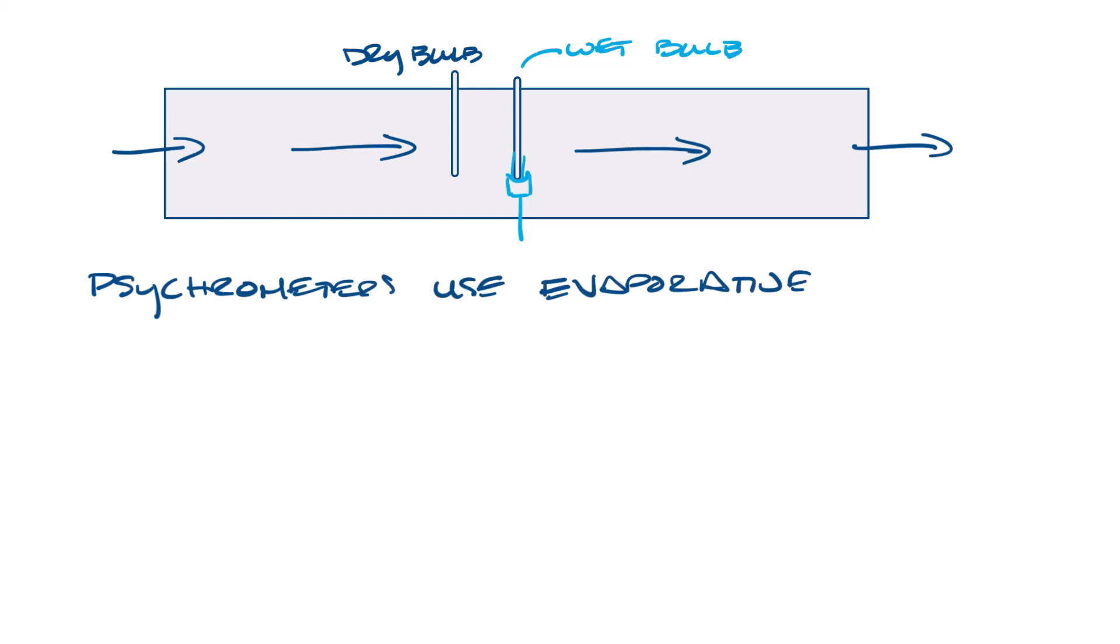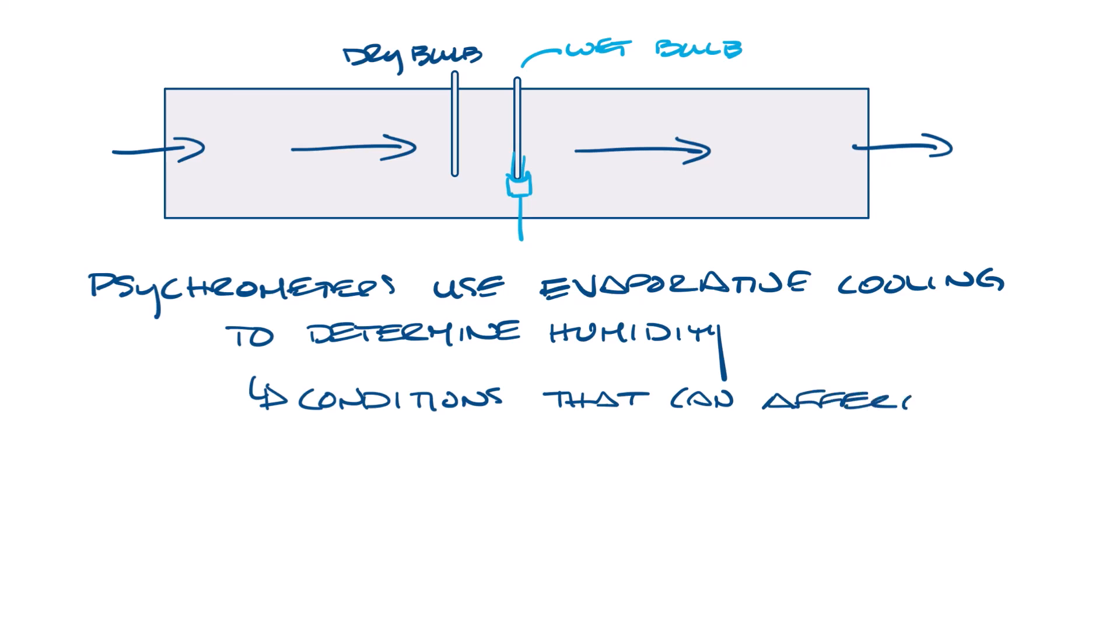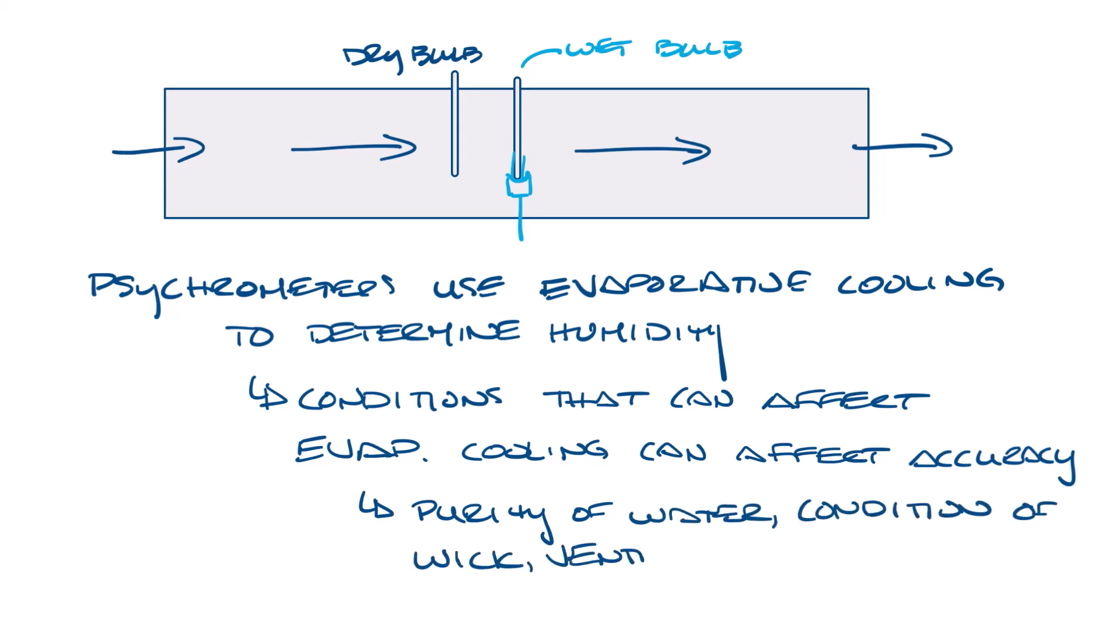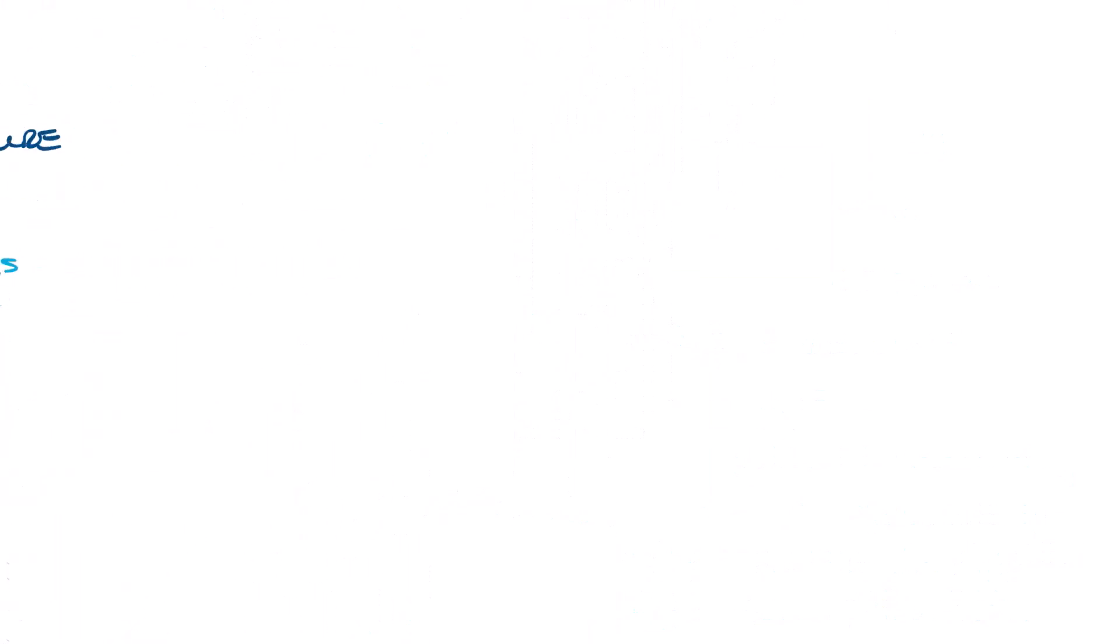Psychrometers use evaporative cooling to determine the humidity. So conditions that might affect evaporative cooling can affect the accuracy of the reading. For instance, the purity of the water, the condition of the wick, the ventilation rate, and radiation, such as direct sunlight, can affect the reading. Psychrometers have an accuracy of about plus or minus three to seven percent relative humidity.